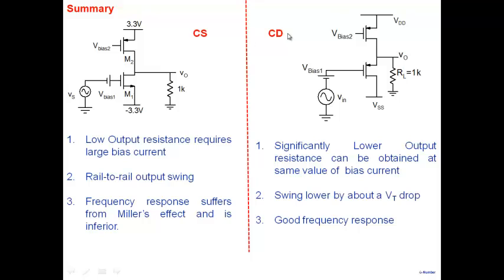The common drain amplifier has low output resistance and good frequency response as positive features, but swing is lower due to the VGS drop between input and output nodes. The gate-to-source voltage drop is at least as large as the threshold voltage, so the common drain has poor swing. Comparing the two for an output stage: common drain has all the nice features except swing, while common source has good swing but not low output resistance, and frequency response is also not as high.